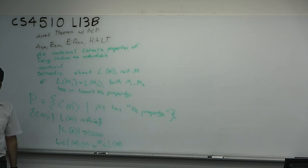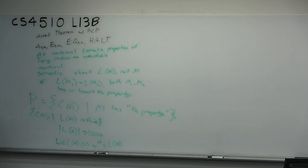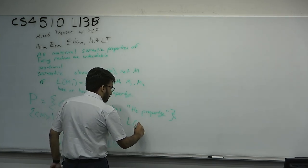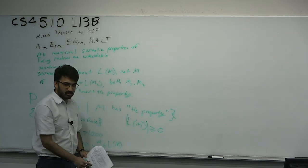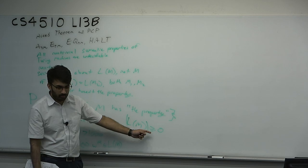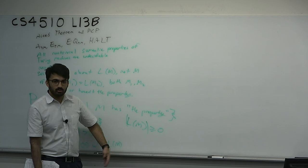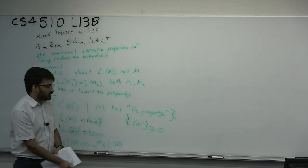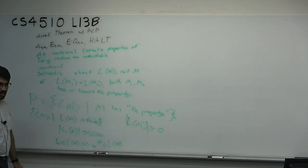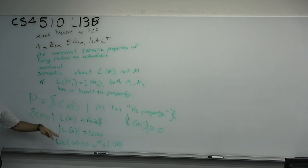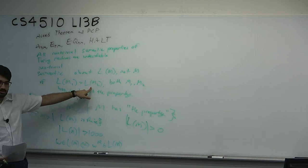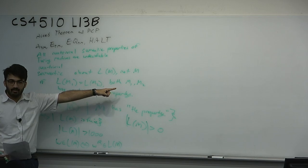A student asks how you know a property is semantic and non-trivial. It's non-trivial if there exists a machine with the property and one without — that's all it needs. For example, 'the size of L(M) is greater than or equal to zero' is trivial because every machine accepts a language of zero or more strings — it's always true, therefore always decidable. But if you change it to 'greater than zero,' suddenly the empty language hasn't the property, making it non-trivial. Semantically, a property is about the language, not the machine — heuristically, if both M1 and M2 have the same language but different machines, both must either have or not have the property.